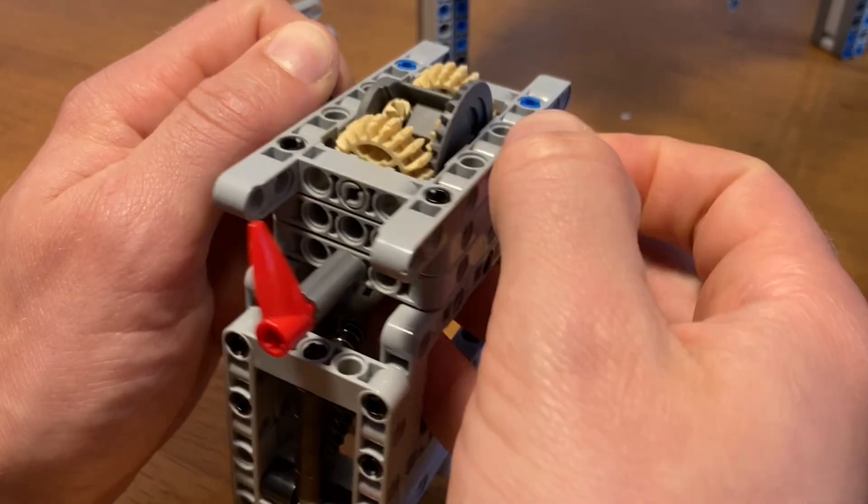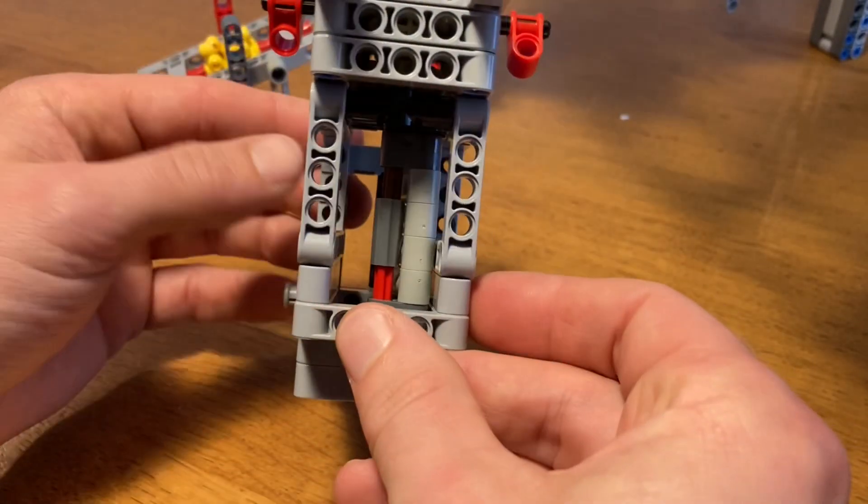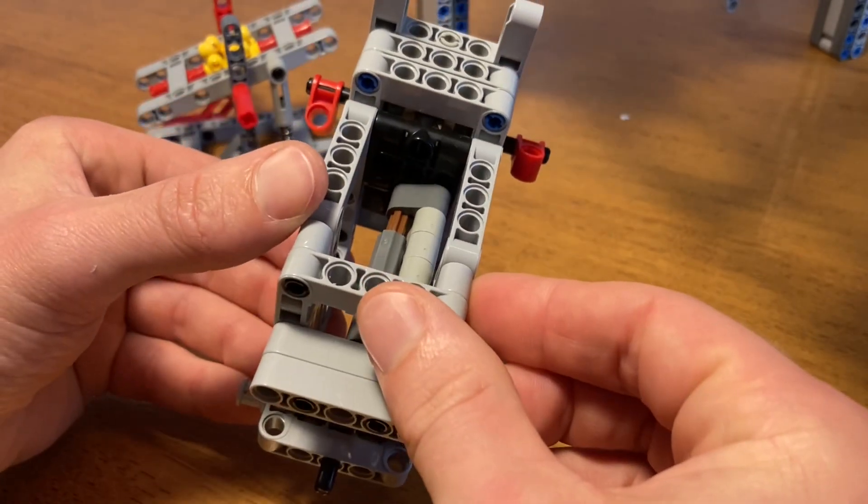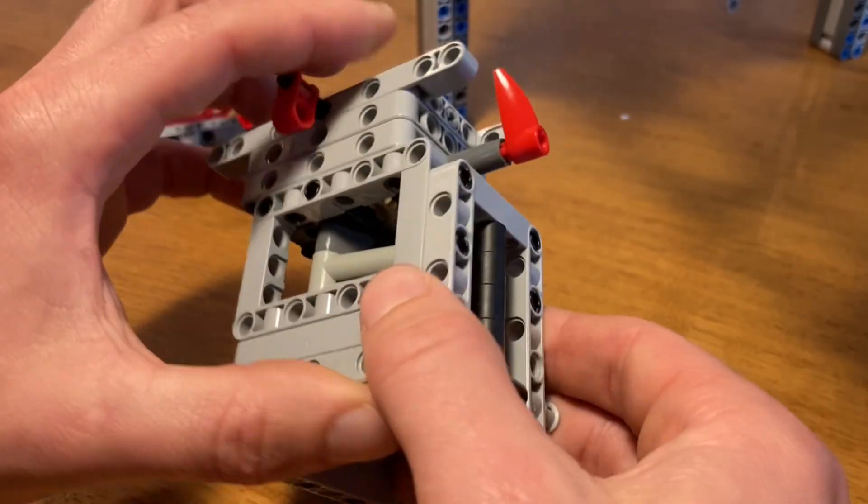Differentials are used in cars. If a car takes a turn to the left, the left wheel has a lower radius than the right wheel, so the left wheel has to turn slower than the right wheel.